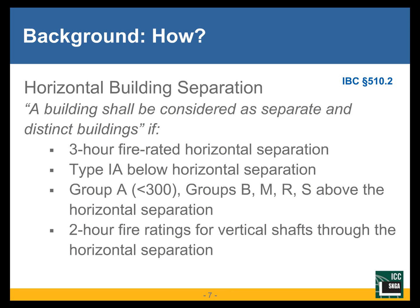There are two code provisions that allow for the design and construction of podium structures. The first is in the IBC — I'm including code references in the upper right-hand corner of some slides so you can read them yourself. The first provision is a horizontal building separation allowance, which says that the upper and lower portions can be considered as separate and distinct buildings, as long as you have a three-hour fire-rated horizontal separation at the podium level.